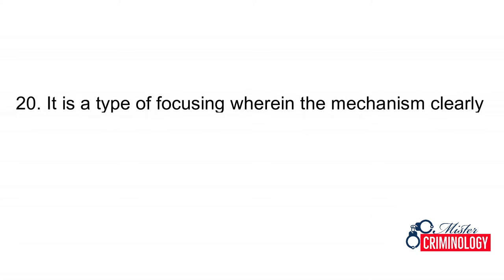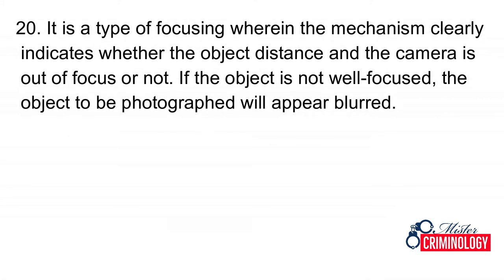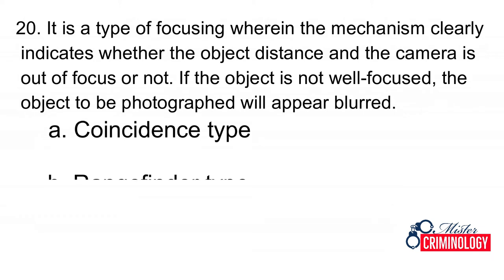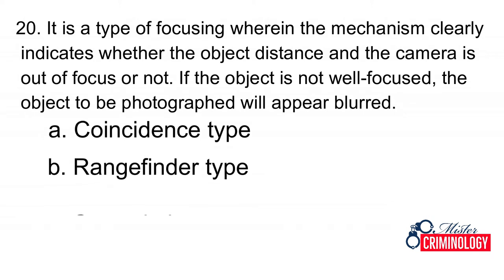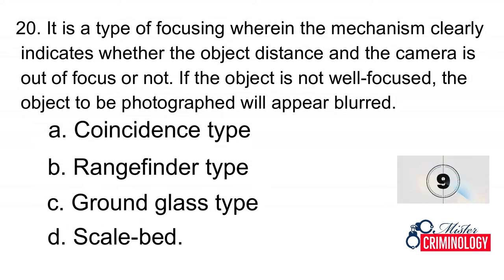Question 20: It is a type of focusing wherein the mechanism clearly indicates whether the object distance and the camera is out of focus or not. If not well focused, the object will appear blurred. A. Coincidence type, B. Rangefinder type, C. Ground glass type, D. Scale bed. Answer: C. Ground glass type.